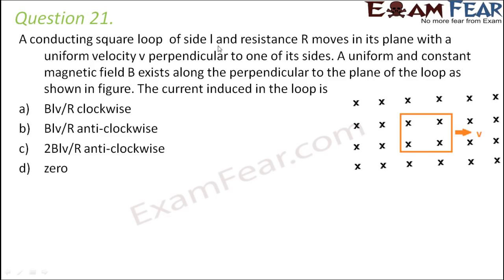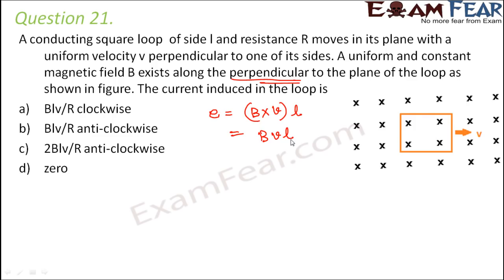Question number 21: A conducting square loop of side l and resistance R moves in its plane with a uniform velocity v perpendicular to one of its sides. A uniform and constant magnetic field B exists perpendicular to the plane of the loop. Since the loop is moving, this is a case of motional EMF. The induced EMF = B × v × l (θ = 90°, so sine θ = 1), giving EMF = Bvl.